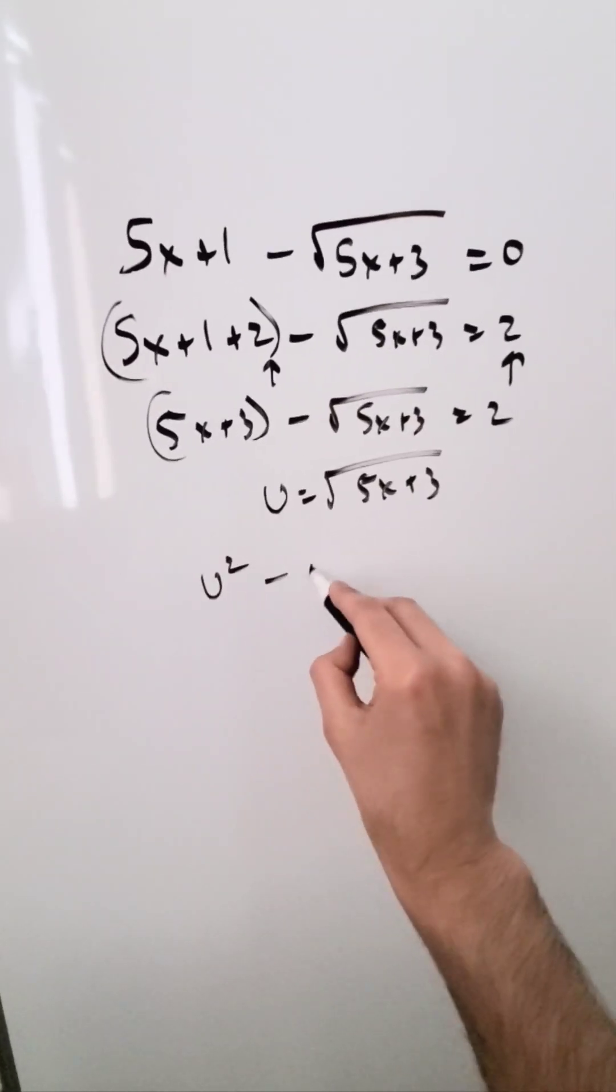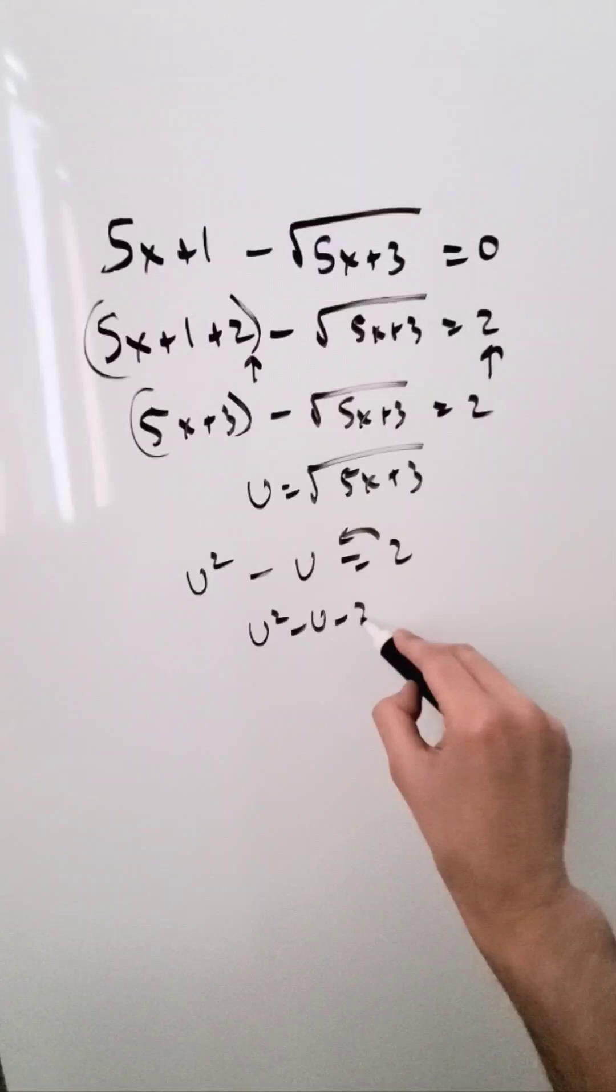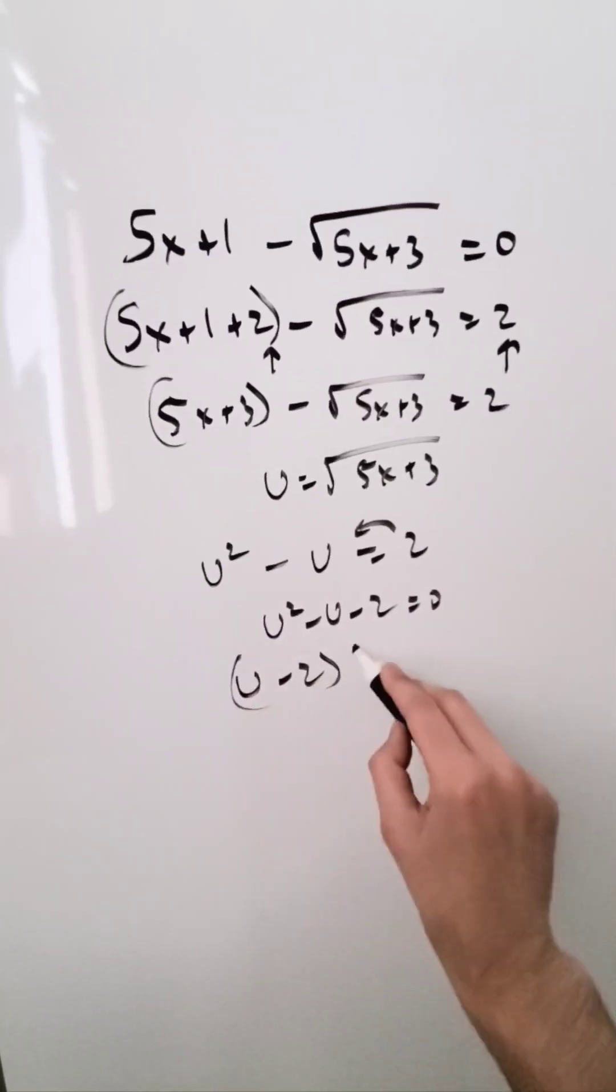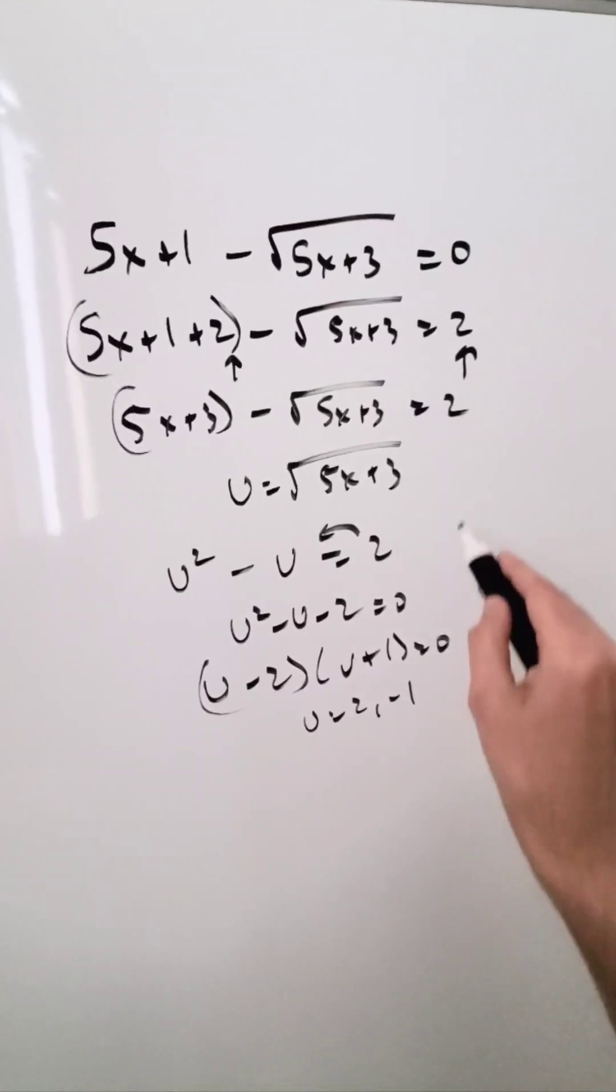I now have u squared minus u equals 2. I'll push this here: u squared minus u minus 2 equals 0. Factor: u minus 2 and u plus 1 equals 0. U here is equal to 2 comma minus 1.